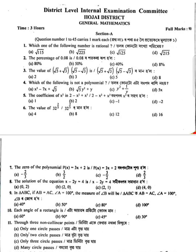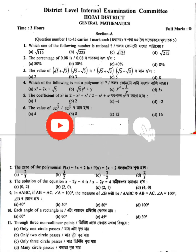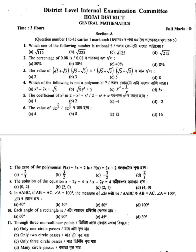Hello my dear students, I hope you are very well. This is the July District question paper for the annual examination 2024, General Mathematics. This is a very important question: which one of the following is an irrational number? Option four is correct.